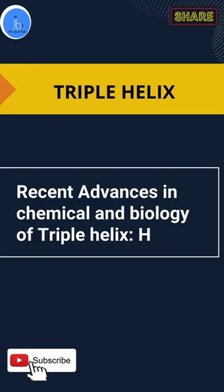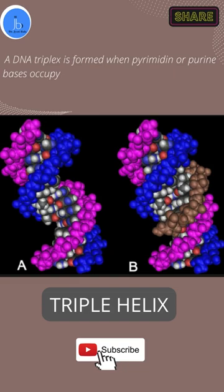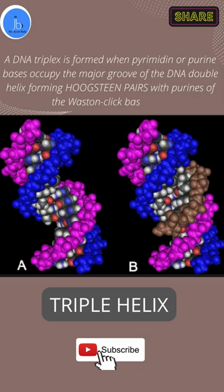This is called H-DNA or triplex DNA. A DNA triplex is formed when pyrimidine or purine bases occupy the major groove of the DNA double helix, forming Hoogsteen base pairs with the purines of the Watson-Crick base pair.